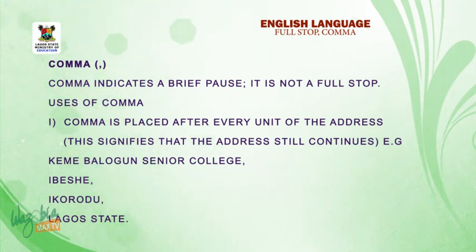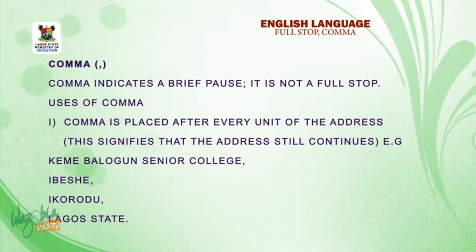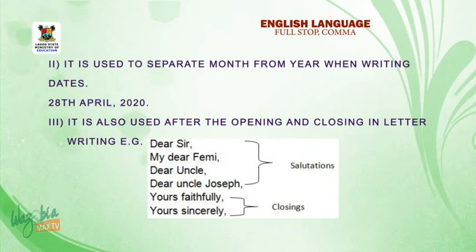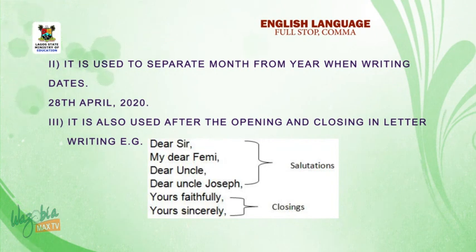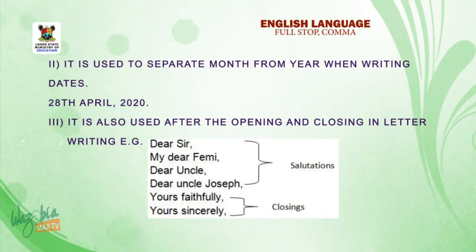Number one: comma is placed after every unit of the address. This signifies that the address still continues. Number two: comma is used to separate month from year when writing dates. E.g., 28 April, 2020. Number three: it is also used after the opening and closing in letter writing. E.g., Dear Sir, My Dear Family, Dear Uncle, Dear Uncle Joseph.